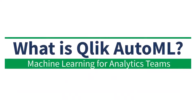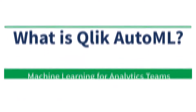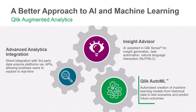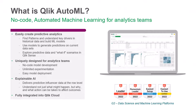What is Qlik AutoML? Qlik AutoML is part of a full suite of augmented analytics capabilities available in Qlik Cloud that recognizes patterns and drivers in historical data to create machine learning models that can predict future outcomes using a simple no-code approach for business analysts and analytics teams.